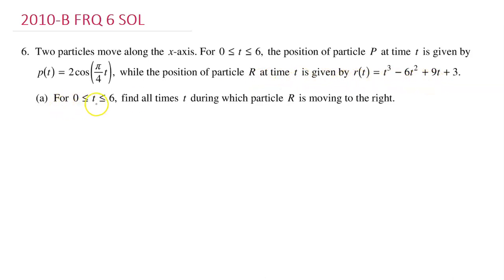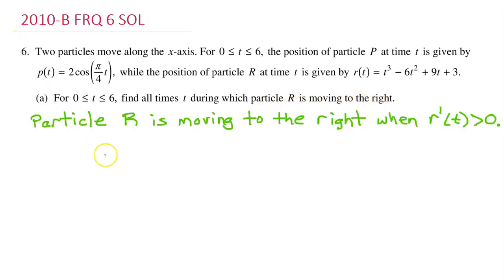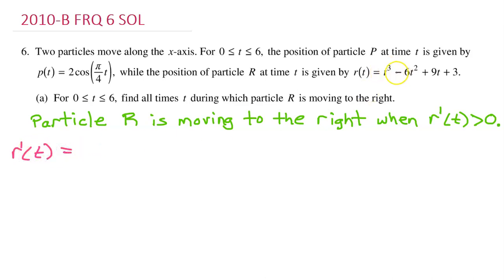Part A: For t between 0 and 6, find all times t during which particle r is moving to the right. We know that a particle will be moving to the right when its velocity is positive. So particle r is moving to the right when r prime of t is greater than 0. Using the power rule, the velocity r prime is 3t squared minus 12t plus 9.